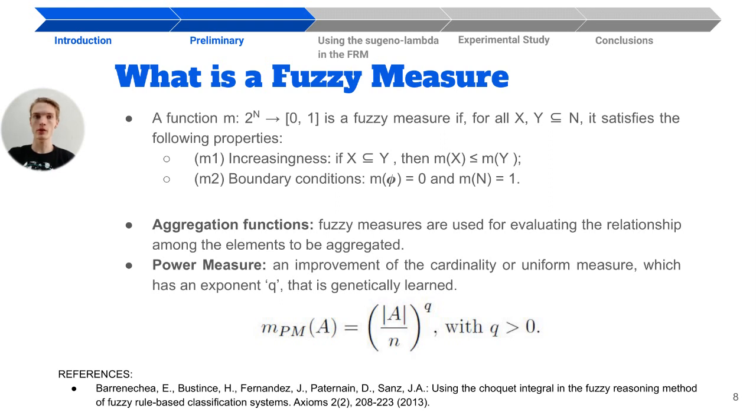Now, the power measure. It was introduced in the same study that introduced the FRM that used the Choquet integral as aggregation operator. The power measure is an improvement of the cardinality or uniform measure, which has an exponent Q that is genetically learned.